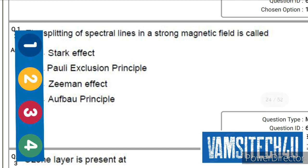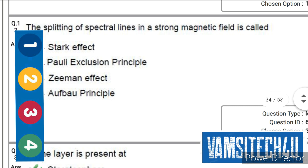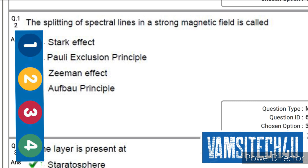Next question: The splitting of spectral lines in a strong magnetic field is called... the right option is third one, that is Zeeman effect.